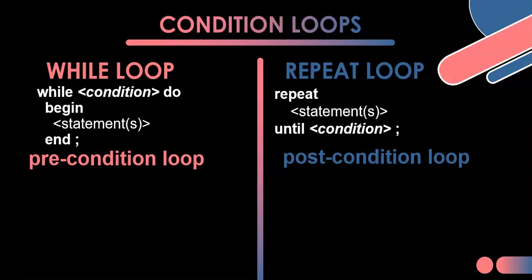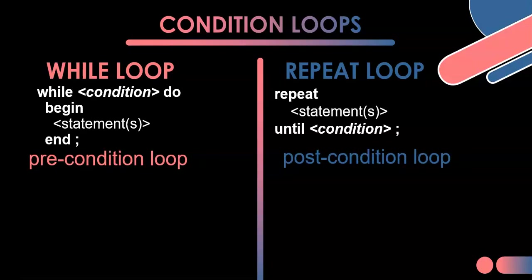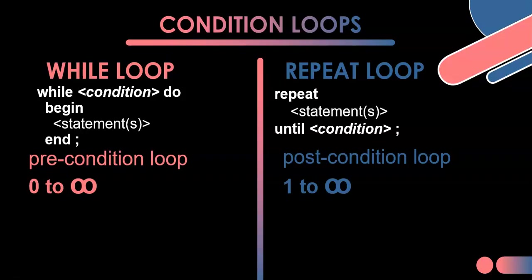A while loop will run from 0 to infinity — meaning it could run 0 times, 1 time, 5 times, a million times, or infinitely. Because the condition is checked at the beginning, it's possible that when checked the very first time the condition is already met, so the loop statements won't happen at all. That's why a while loop could occur 0 times. But with a repeat loop, because the condition is checked at the end, it will run through those statements at least once — so it goes from 1 to infinity.